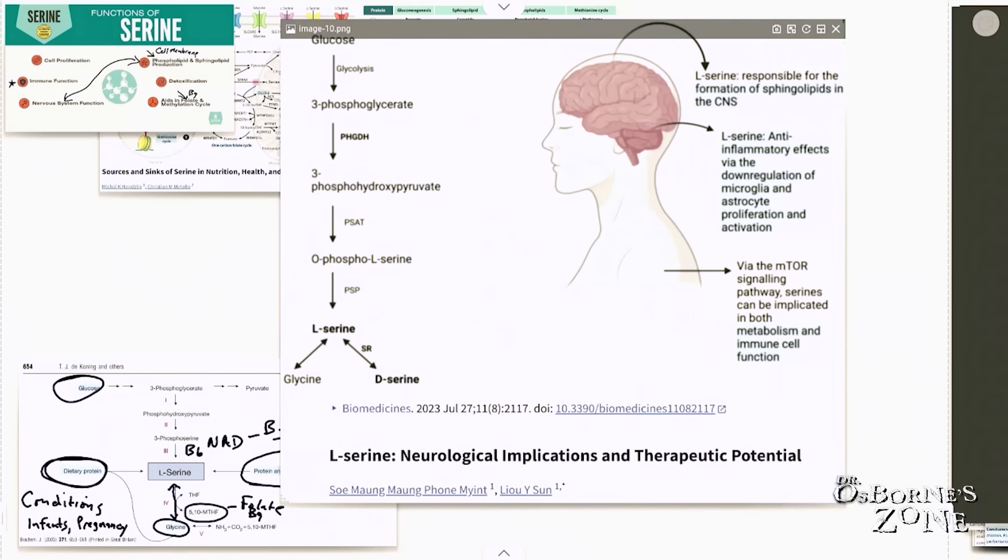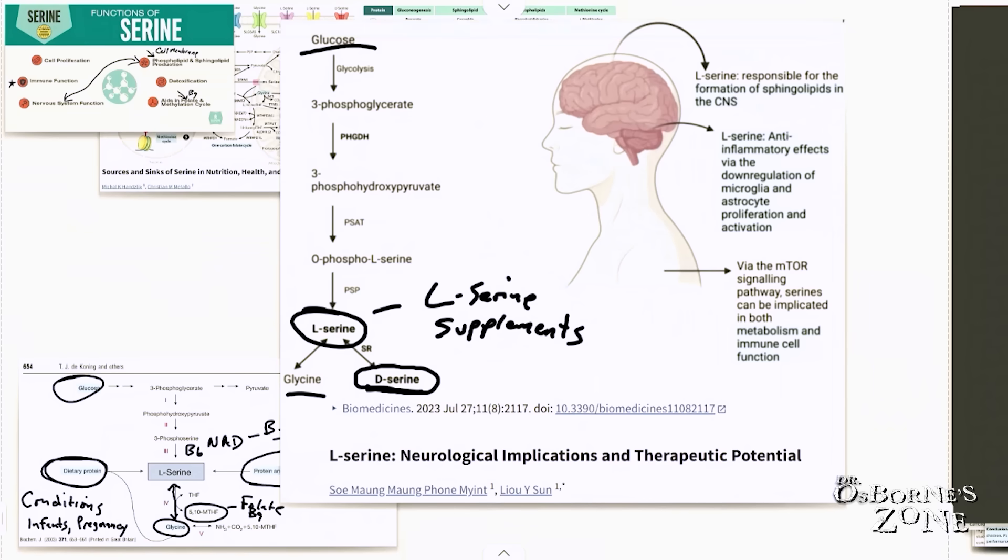We can take glucose and we can get to serine through a number of biochemical pathways and then we can go to glycine or we can make something called D-serine. Now notice this is L-serine. And we're talking about nutritional supplementation, it's the L-serine that you're going to typically find in supplements, not the D-serine. Your body can make D-serine from L-serine here in a biochemical process. And it's the D-serine that's super important for it acts as a neurotransmitter. So it acts in a big way in terms of memory and cognitive function.